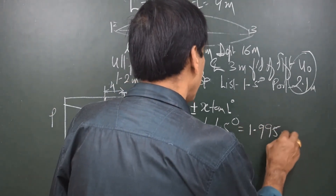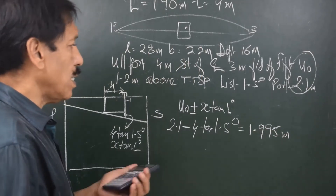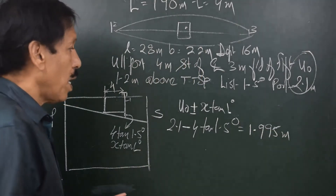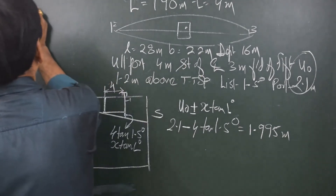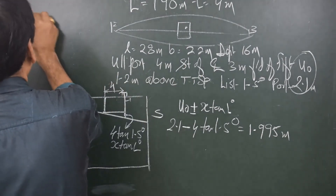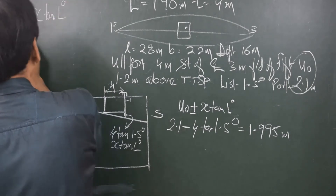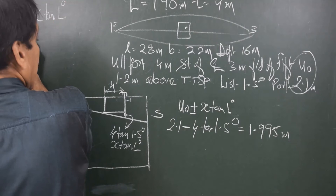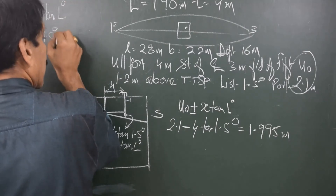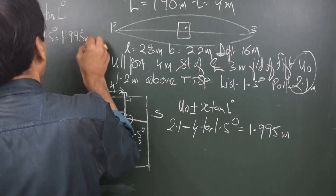Calculating: tan(1.5°) × 4 = 0.105, subtracted from 2.1 gives 1.995 meters. This ullage of 1.995 meters is now corrected for list. The standard formula is: U_0 ± x·tan(list) = 2.1 − 4·tan(1.5°) = 1.995 meters.